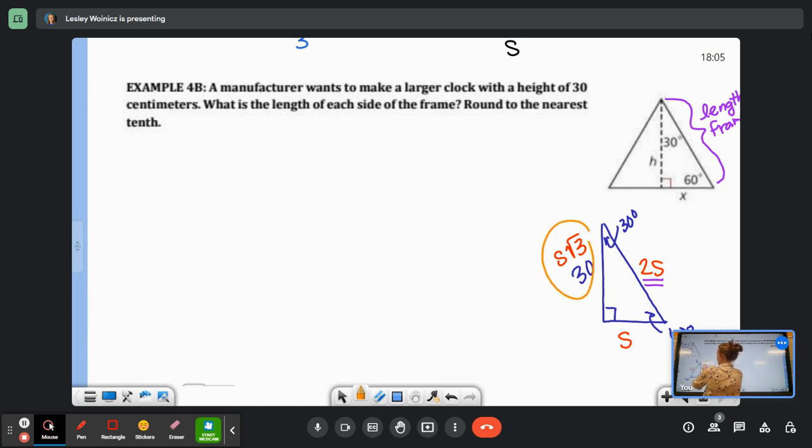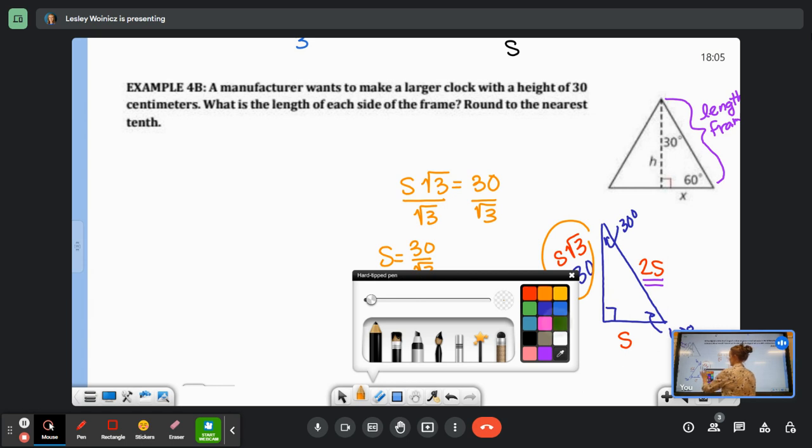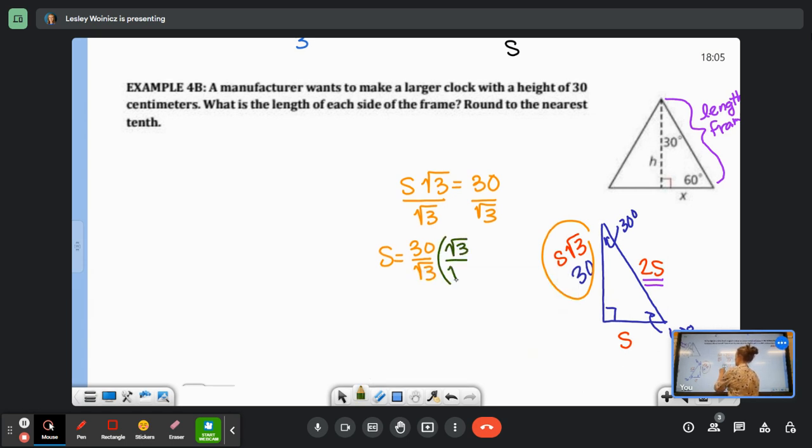So let's find S and then double it. I know that S√3 equals 30. So to find S, I can just divide by √3. So my S equals 30 over the square root of 3. But I'm not allowed to leave a radical in the denominator, so I'm going to have to multiply top and bottom by √3 and rationalize. So that gives me S equals 30√3 over 3. Divide 30 by 3, and my S is 10√3.